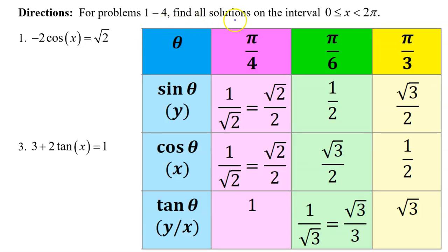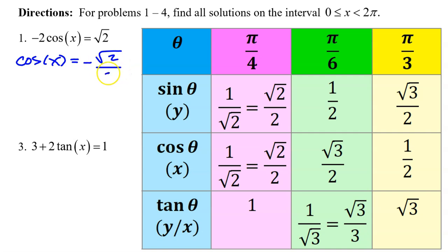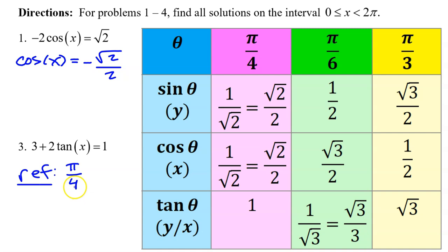For problems 1 through 4, we will find all solutions on the interval from 0 to 2π. For number 1, we need to isolate the cosine by dividing both sides by negative 2. So we get cosine of x is equal to negative radical 2 over 2. We can find the reference angle by asking ourselves: the cosine of what angle is radical 2 over 2? We have memorized that the cosine of π/4 is radical 2 over 2, so the reference angle is π/4.